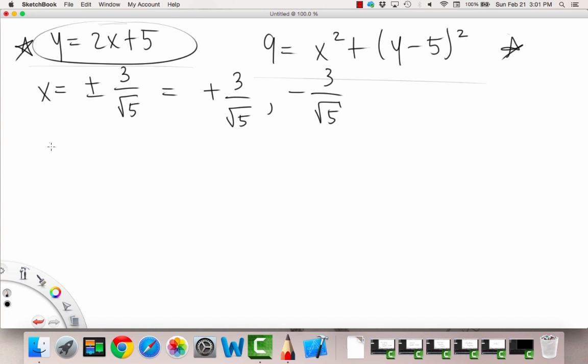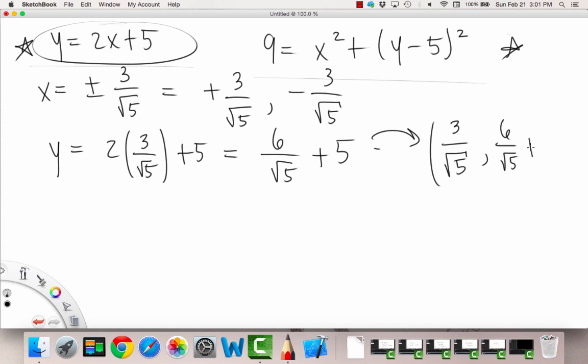Okay. So let's do that. So we have, for this first one, let's say we plug in the positive 3 over radical 5. So 2 times positive 3 over radical 5, and then plus 5. So we can just rewrite this simply as 6 over radical 5, and then plus 5. So that's one right there that we have found. So the x coordinate of one of our intersections is 3 over radical 5. And when we plug that into either of our equations, then we get a y value of 6 over radical 5 plus 5. So this point lies on both the line and the circle at the same time.